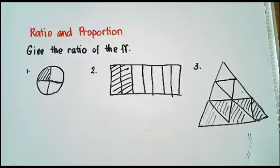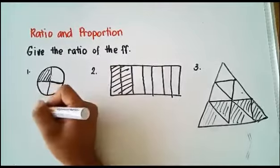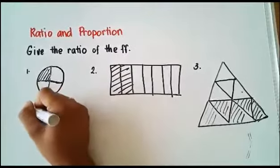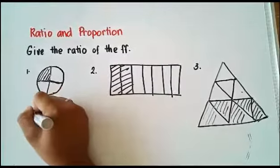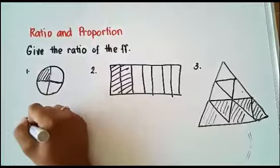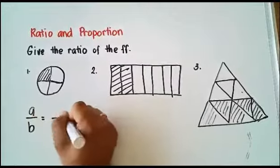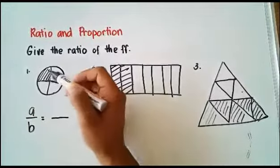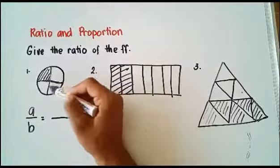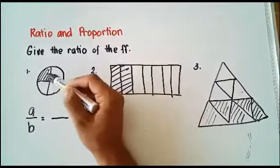Give the ratio of the following. To give the ratio, we are going to write A over B. We'll count how many parts an object has — that will be our denominator.